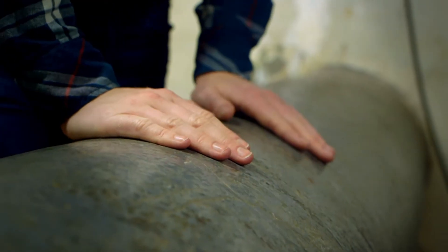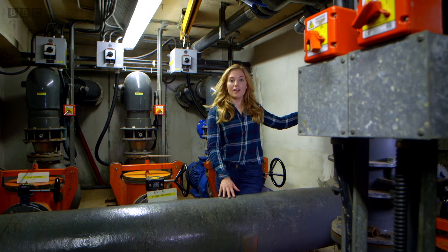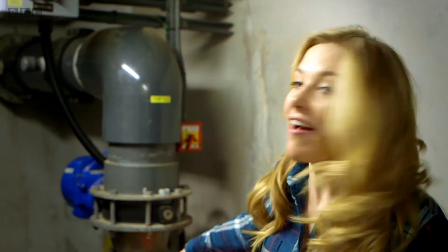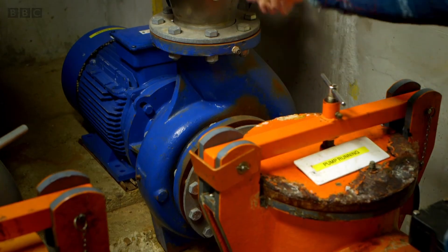So this pipe here is the one that sucks the water up from the sump, which is just behind this wall. And inside this blue bit of machinery is the spinning wheel which whizzes the water around really fast and pushes it up to the top of the water slide.